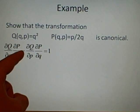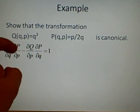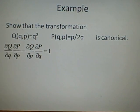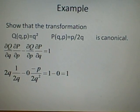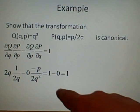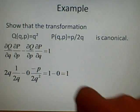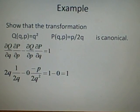So 1 minus dQ/dp times dP/dq. There's no p's in this, so it'll go to 0. So this term we don't even have to include, but I've done it here, minus p over 2q squared, but you'll end up with 1, so 1 minus 0 is 1. So it's a canonical transformation.